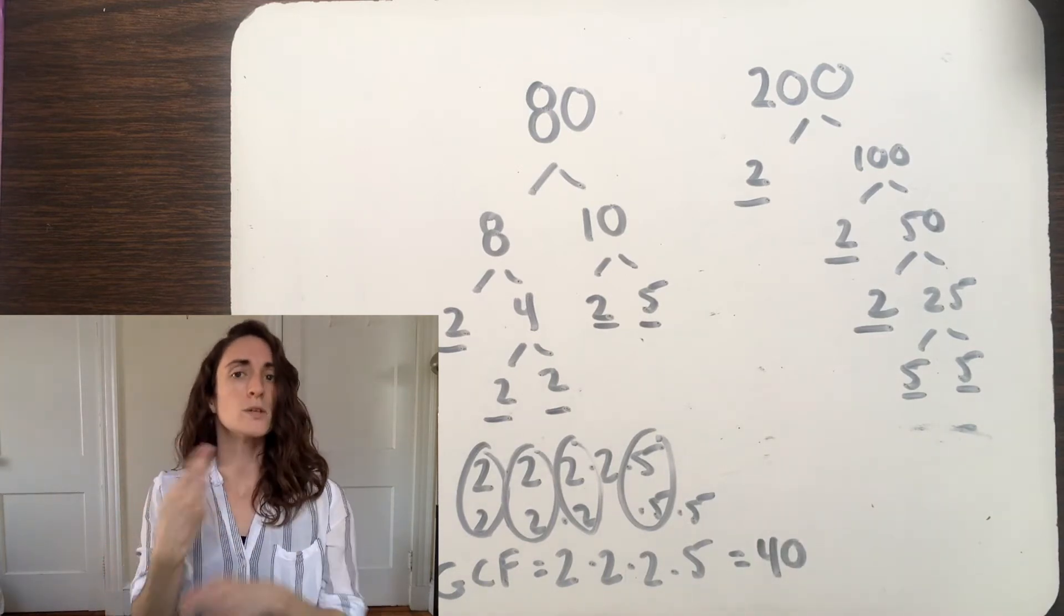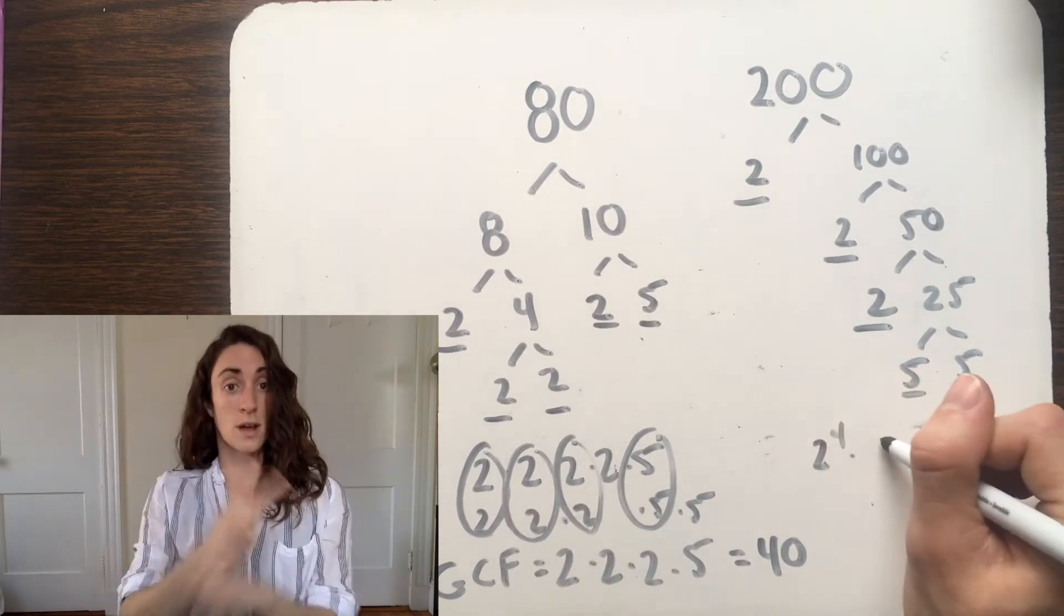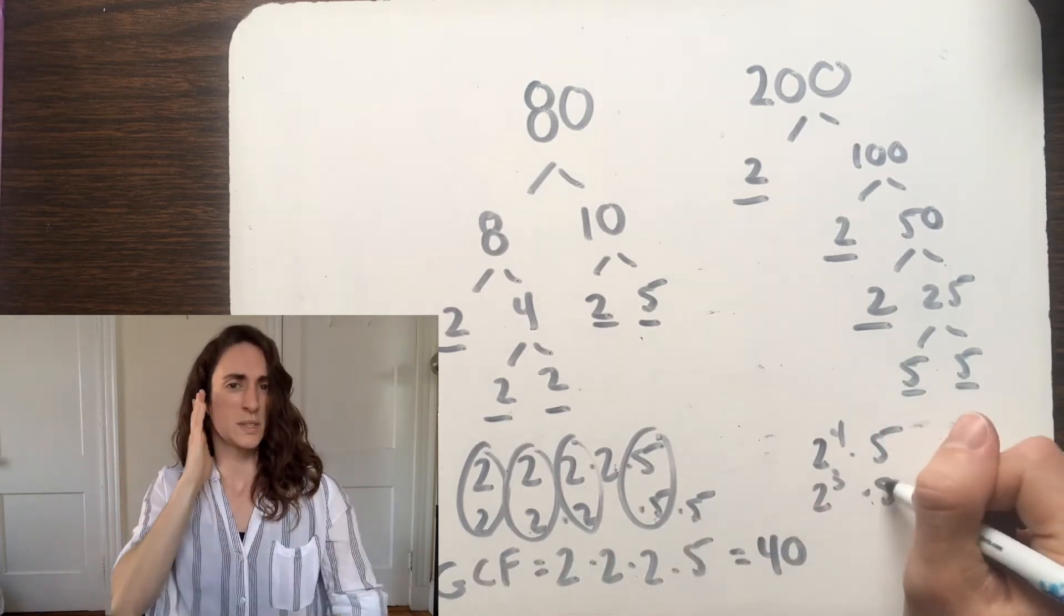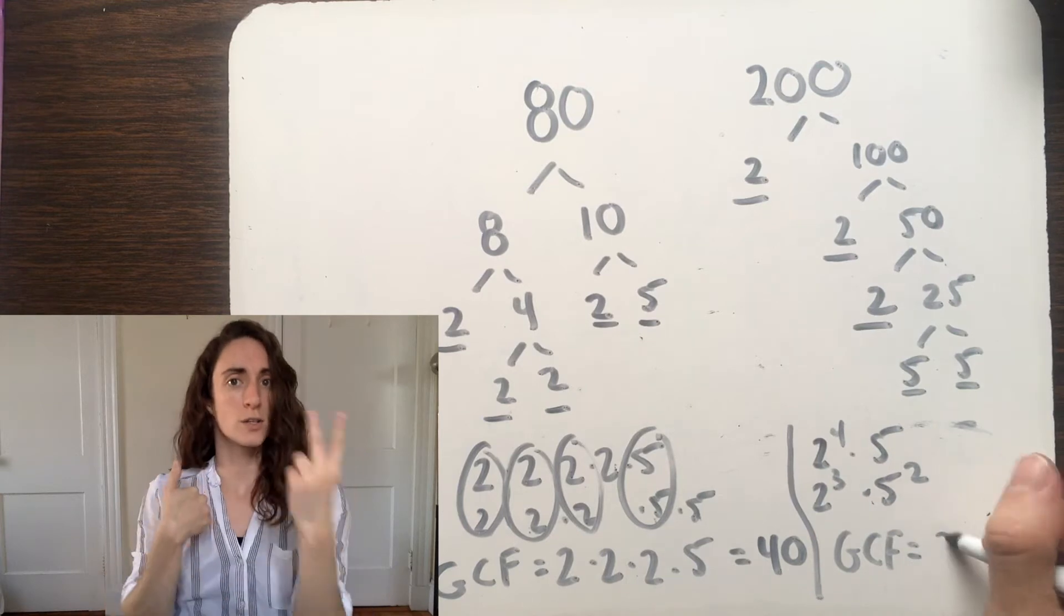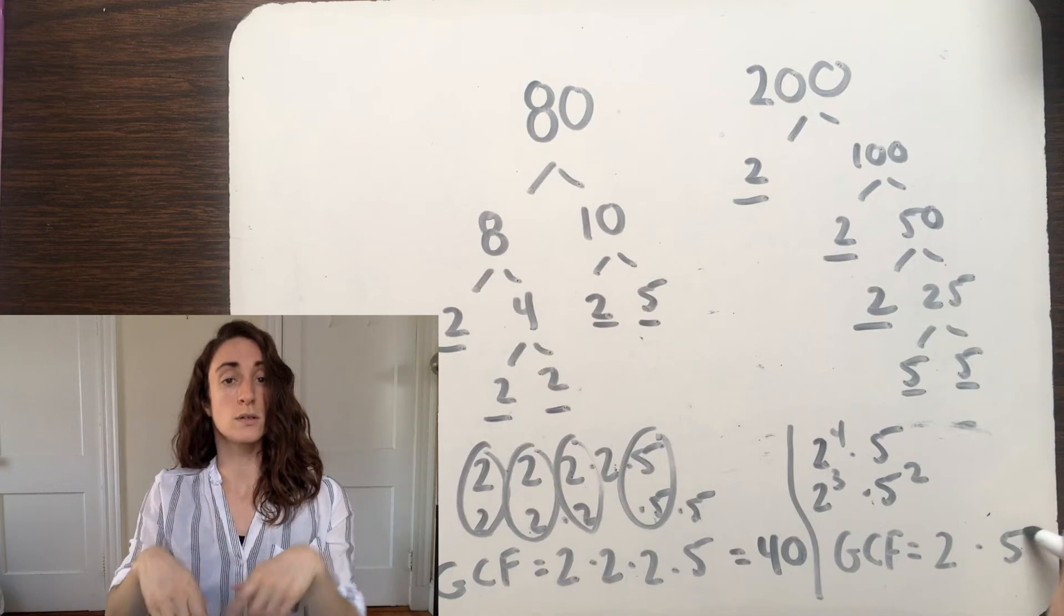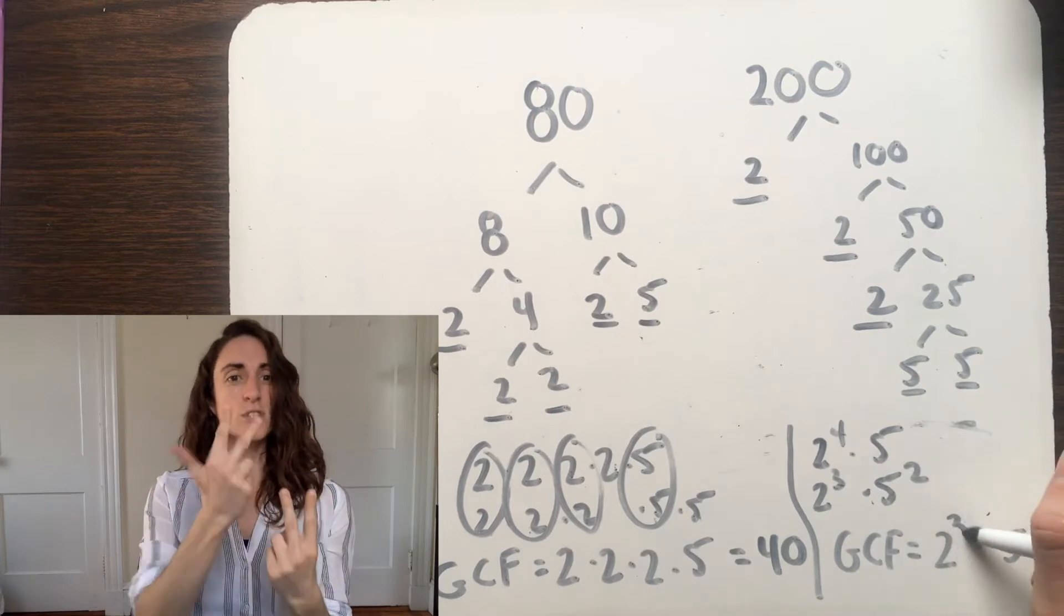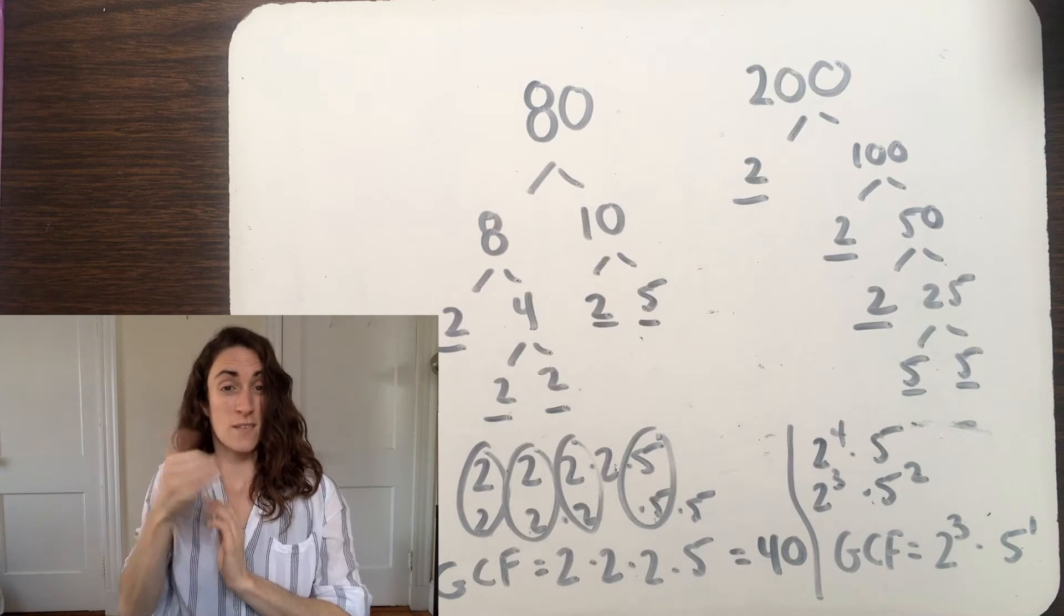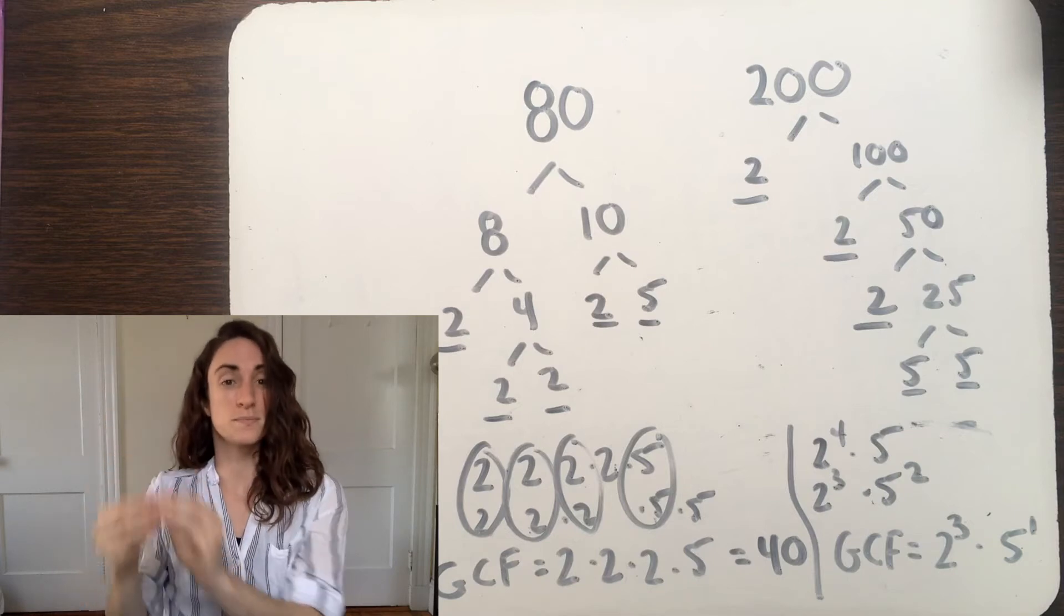Now let's see what would happen if we wrote these prime factorizations with exponents instead of repeated multiplication. So we'd have 2 to the 4th times 5, and 2 to the 3rd times 5 squared. You can see that both expressions have a base of 2 and a base of 5, meaning both of those things will show up in the GCF. Then we can look to the exponents to see how many of each element we'll need, following the smaller exponent of the 2. So if we see that the top expression has 2 to the 4th, and the bottom 2 to the 3rd, that means we know they only share 3 of those 2s, and so 3 is the exponent we'll use. Similarly, we have 5 squared and 5, or 5 to the 1, meaning we follow that smaller exponent, and just have 5 to the 1 in our GCF.